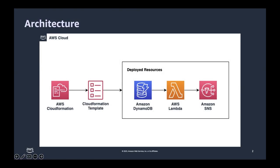Over here we have the architecture which represents a high level of what we're essentially creating. In this demo we're deploying a CloudFormation template which simplifies provisioning and management on AWS. You can create templates for service or application architectures and have AWS CloudFormation use those templates for quick and reliable provisioning of services or applications called stacks. In this situation we're creating a stack that employs Amazon DynamoDB, AWS Lambda, and Amazon SNS.